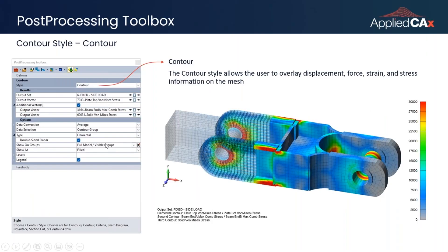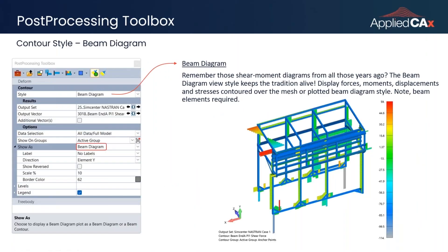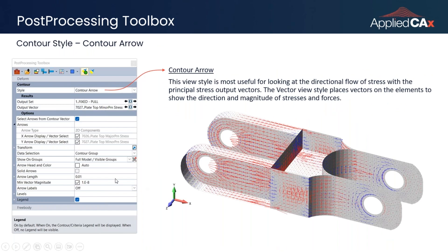Another good contour style is the beam diagram — the shear and moment diagrams from your statics class that you can generate in FEMAP as well. Structural engineers use these to determine whether a structure is suitable. It's good to know you can generate this information, though it only works with beam elements — not plate or solid elements. It's a useful function when beam elements are present in your model.